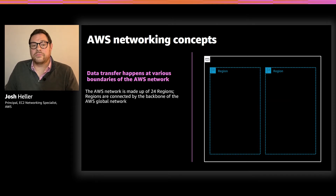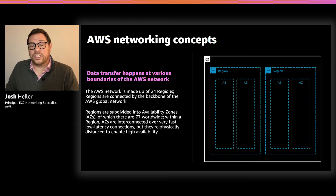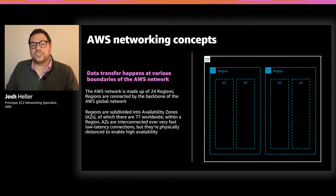The AWS cloud is made up of 24 regions. Each of these regions is part of the AWS Backbone, a fully redundant global network linked by high-speed, low-latency fiber optics. Within each region, there are at least two availability zones. Each region consists of two or more isolated and physically separated availability zones. Each AZ can represent multiple separate data centers and has its own infrastructure such as power, cooling, and security. They're connected using redundant, ultra-low latency connections.